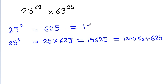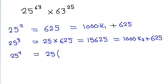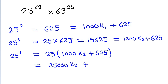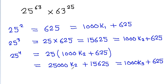Now if we try to calculate 25 to the power 4, that will be 25 times (1000·k1 + 625), giving 25000·k1 + 15625, which can also be written as 1000 times some constant k2 plus 625. So by following the pattern, we can write 25 to the power 63 as 1000·k + 625.